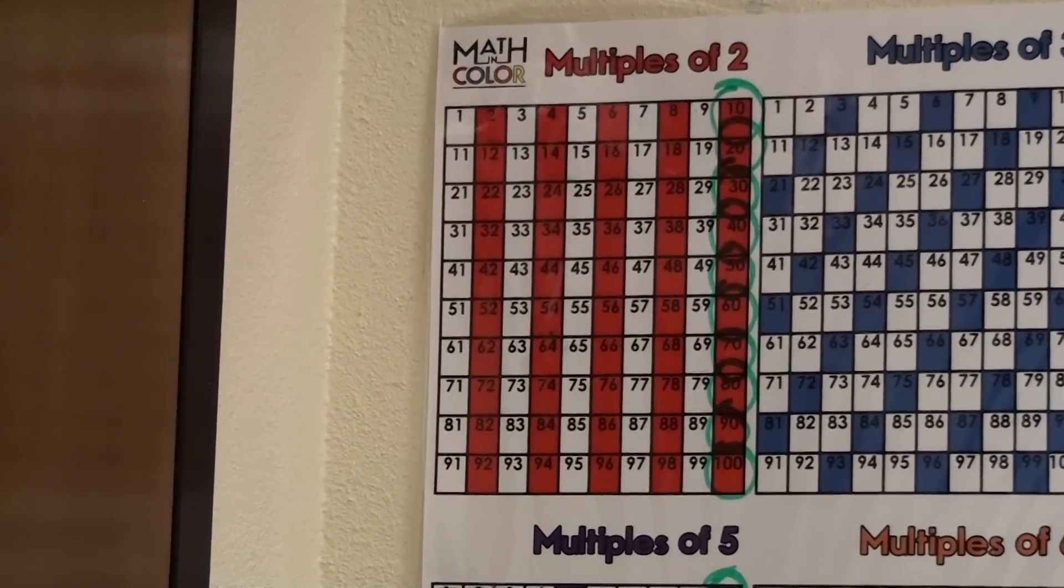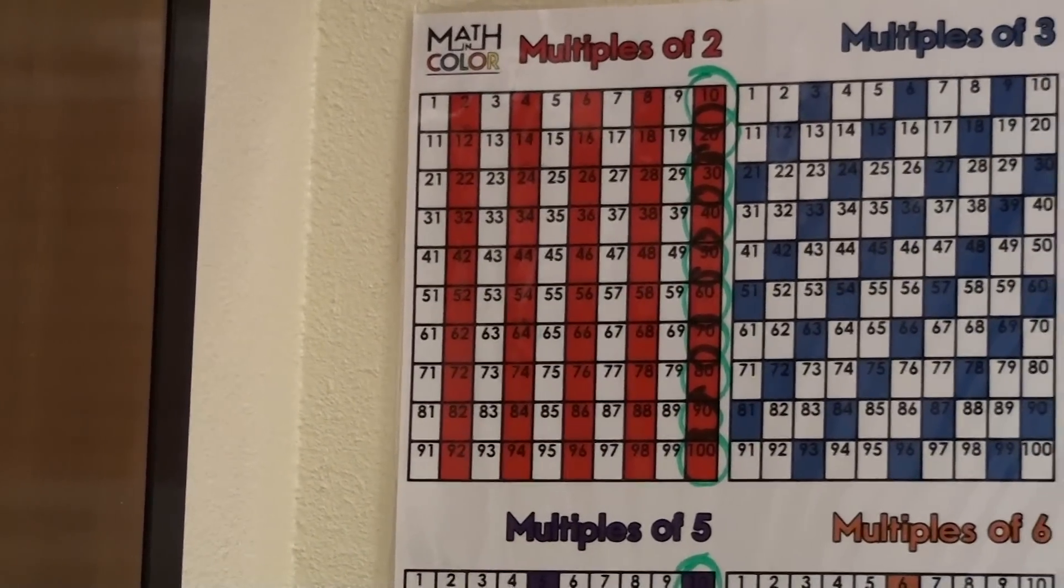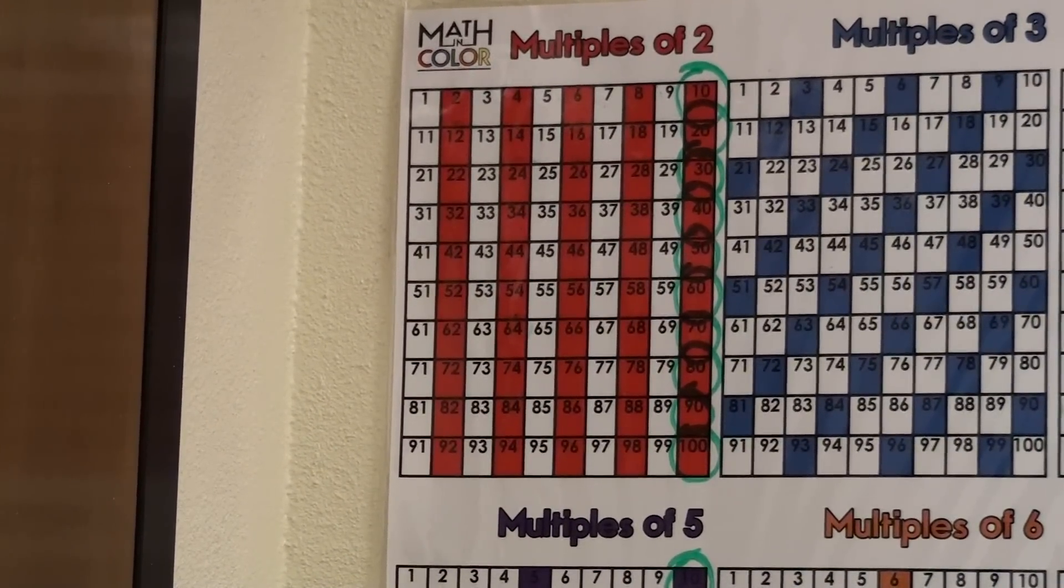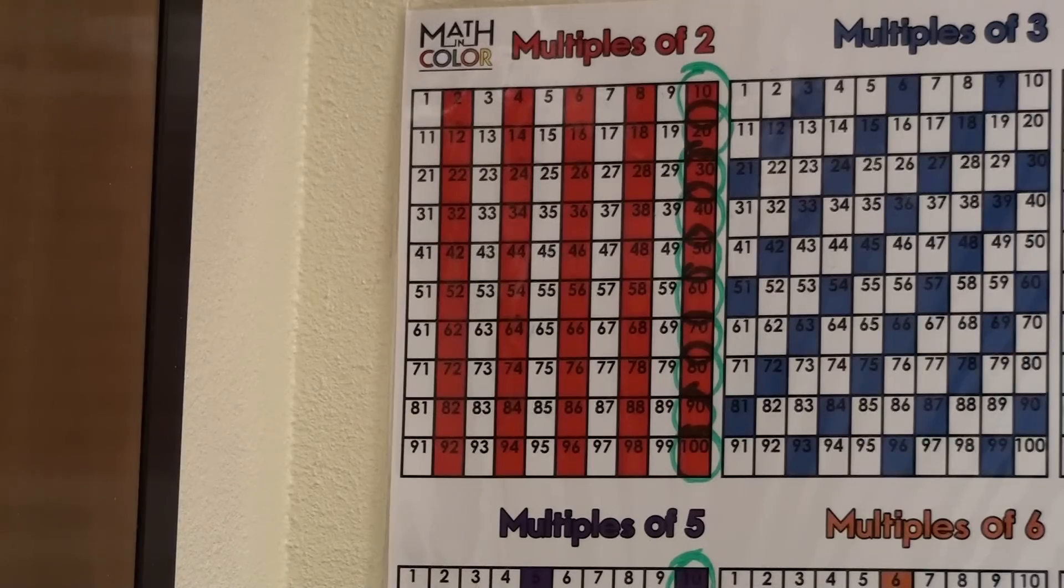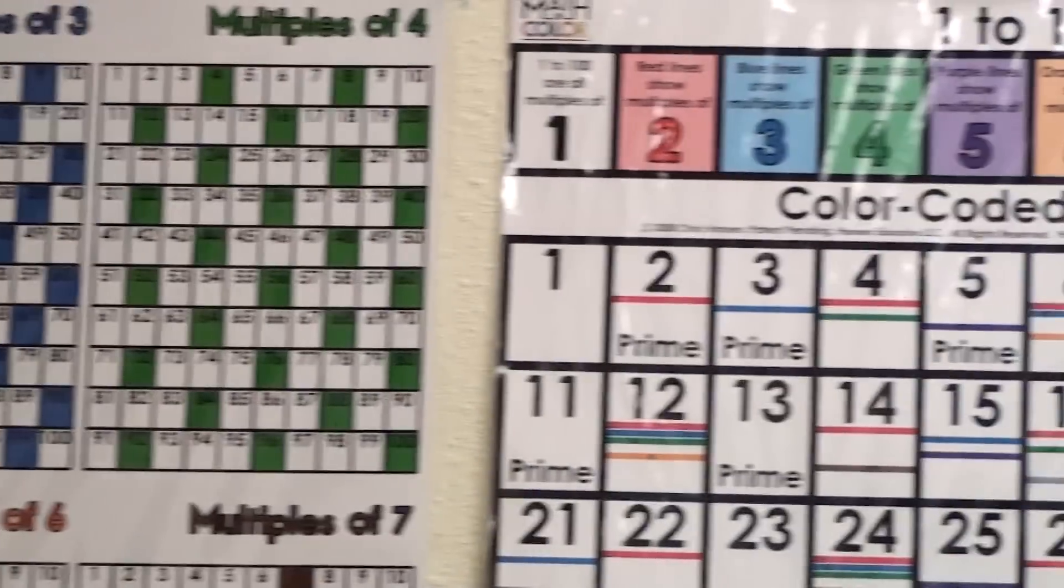And as we go up to the multiples of 2, you can see the same thing. Be sure to use a dry erase marker and to laminate your poster before you do this.